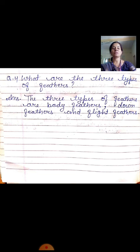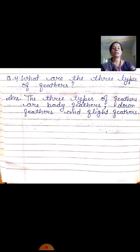Body feathers kaun se hote hain? Jo bird ki body ko shape dete hain, unko hum kehte hain body feathers. Then down feathers — down feathers vo hote hain jo unke wings ke neeche bilkul chhote-chhote soft feathers hote hain, unko kehte hain down feathers. And flight feathers — jinki help se vo fly karte hain, unko hum wings bhi kehte hain. Yeh hain three types of feathers.